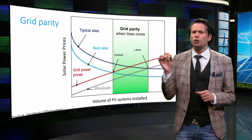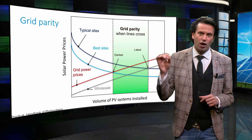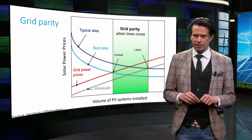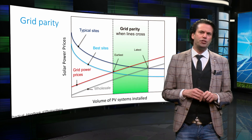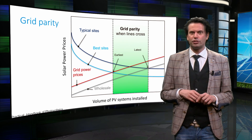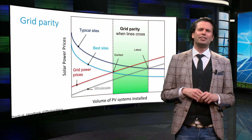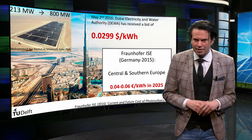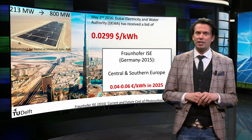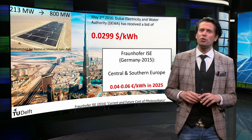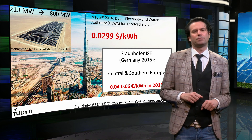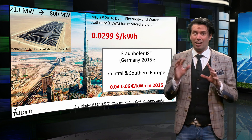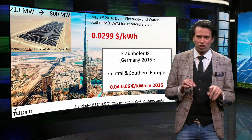It is said, however, that true grid parity occurs when the price of unsubsidized PV power matches the grid price. Grid parity is a very important indicator of the usefulness of a renewable energy technology. The closer the technology is to grid parity, the easier its integration in the local energy mix will be. New solar power plants are now being built in Dubai and India that already promise to deliver electricity at a price below that of conventional coal and gas-fired power plants. The electricity and water authority in Dubai has received a bid to produce solar energy at a levelized cost of under 3 dollar cents per kilowatt hour.